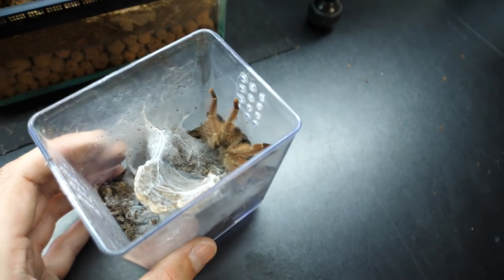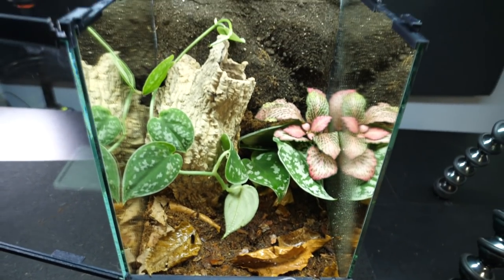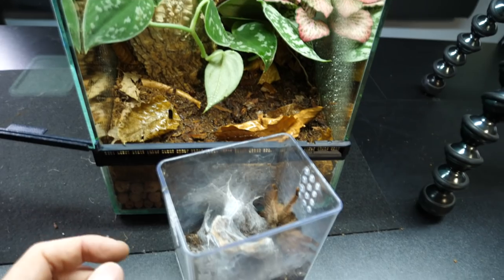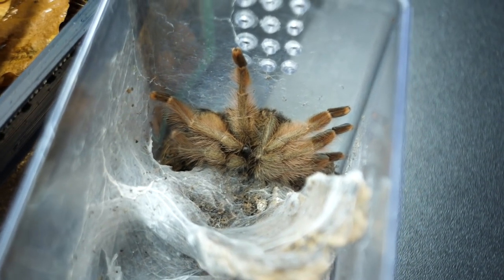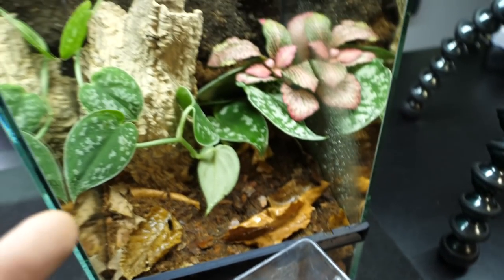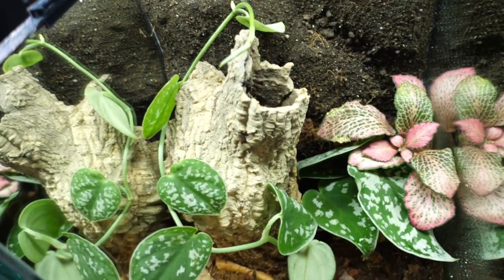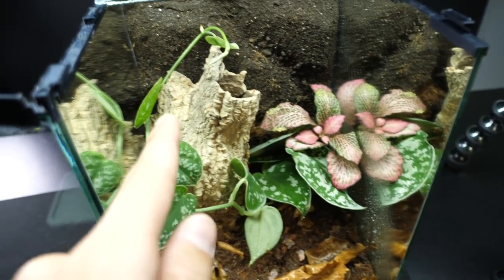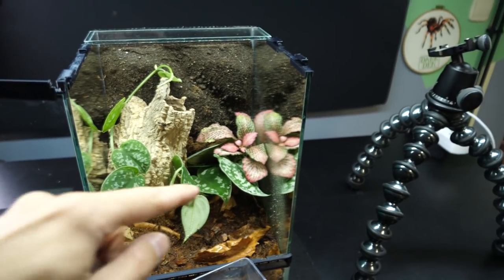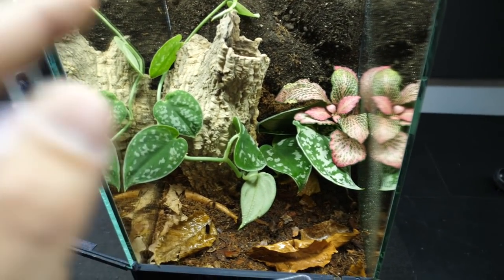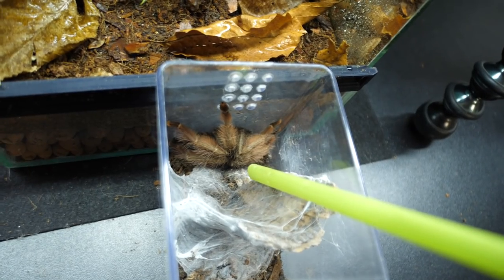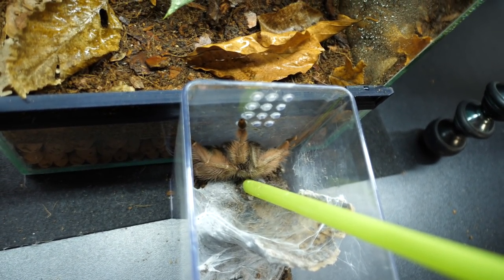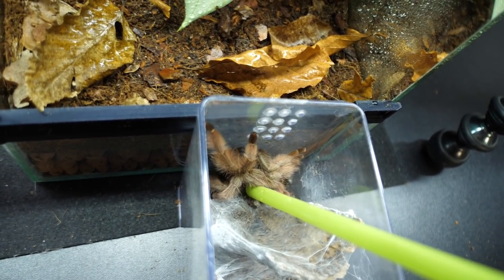Now compare this enclosure with this enclosure. What do you think? Is this upgrade big enough? I think that this will be her permanent enclosure. Maybe she will need a slightly bigger cork bark tube. Maybe with bigger hole. But I think that the size of the enclosure will be alright. Poking stick. This should be fun.